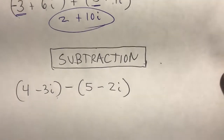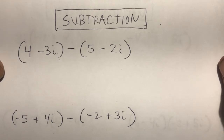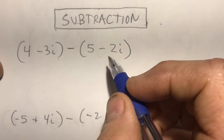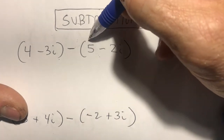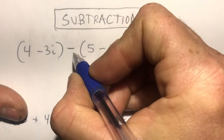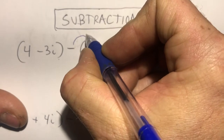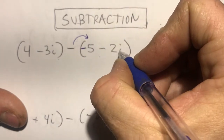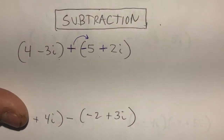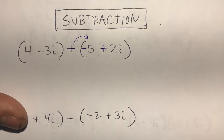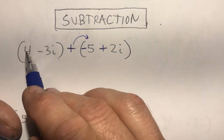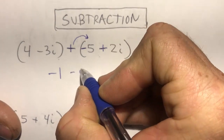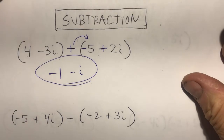Subtraction is very simple too. The only issue is when I subtract, I can run into problems with opposite signs. The best thing to do is distribute the negative into the expression — into this complex number. So the 5 becomes negative 5 and the minus 2i becomes positive 2i. Now I can just add: 4 plus negative 5 is negative 1, and negative 3 plus positive 2 is negative 1i.